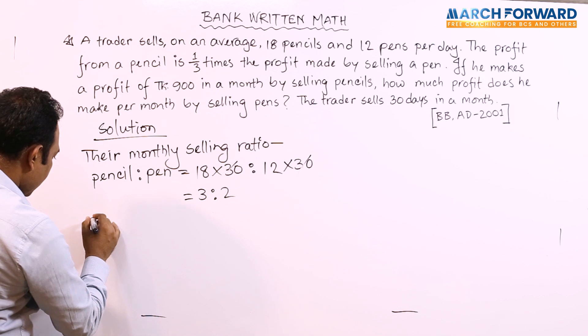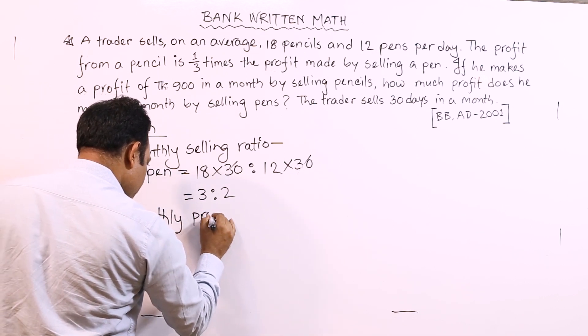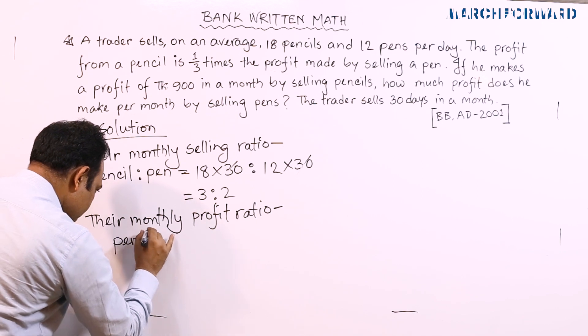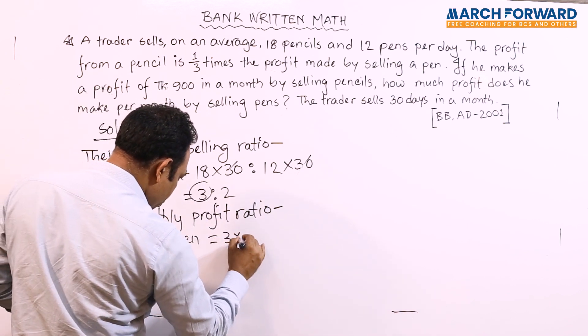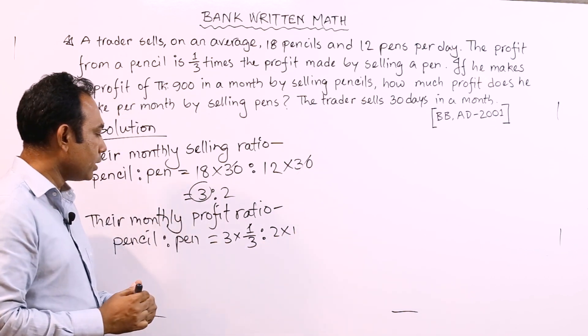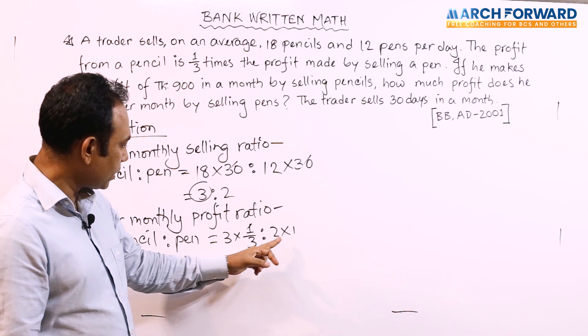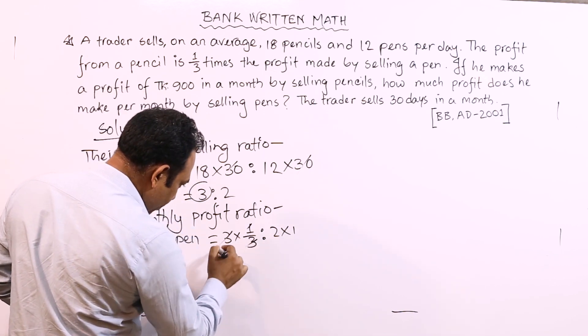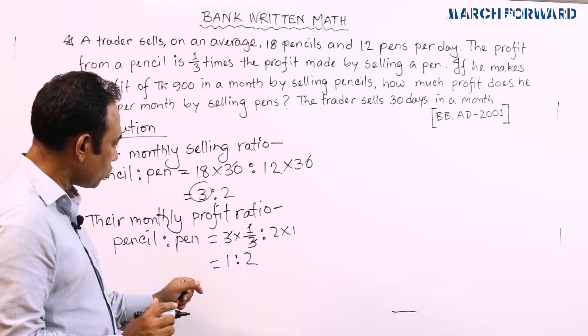The next issue is their profit ratio, their monthly profit ratio. Pencil to pen profit ratio - since pencil profit is one-third of pen profit, the ratio is 1 to 3. So the monthly profit ratio is pencil 1 to pen 3.